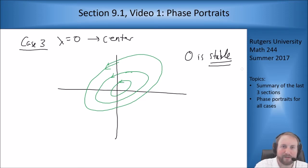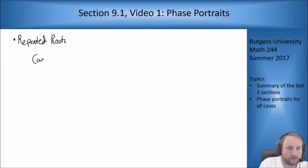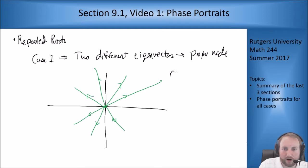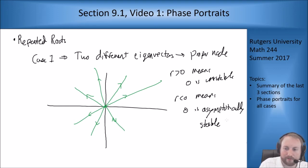The final case we dealt with was our repeated roots. Case one here was two different eigenvectors. This gave me my proper node. This looks something like every solution was a line through the origin. These are either going all in or all out based on the sign of my eigenvalue. So r bigger than zero means zero is unstable. And r less than zero means zero is asymptotically stable.